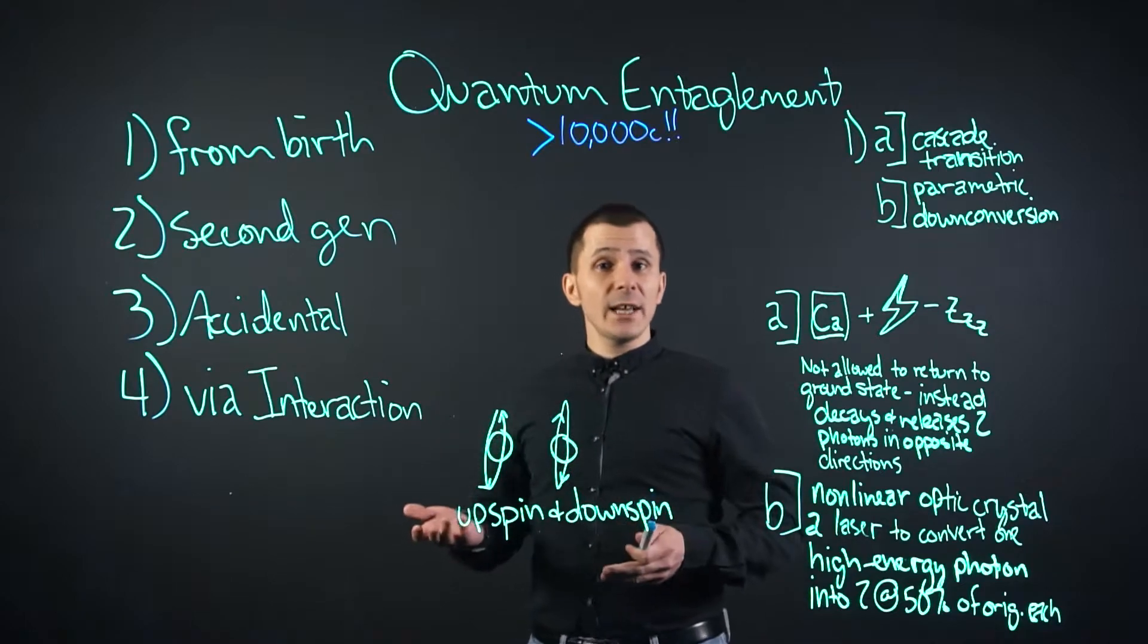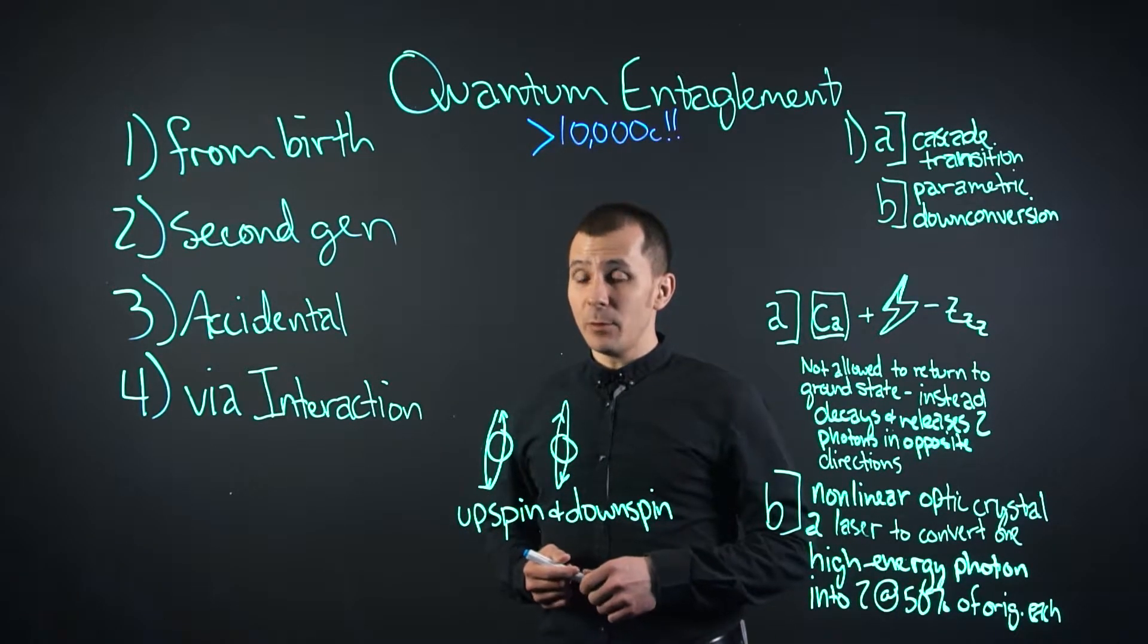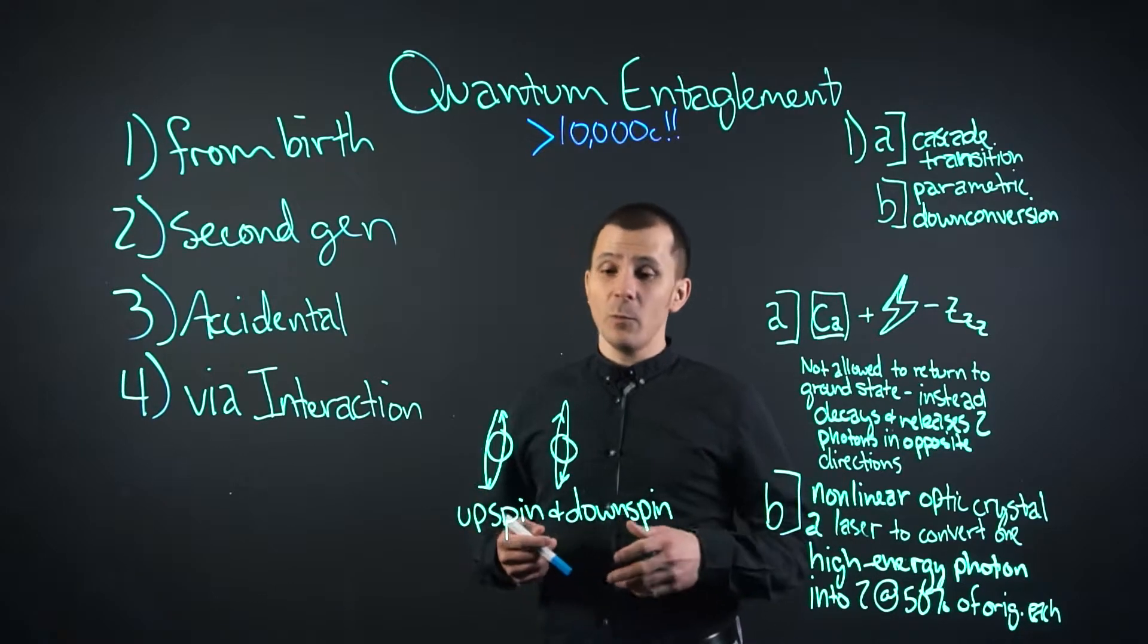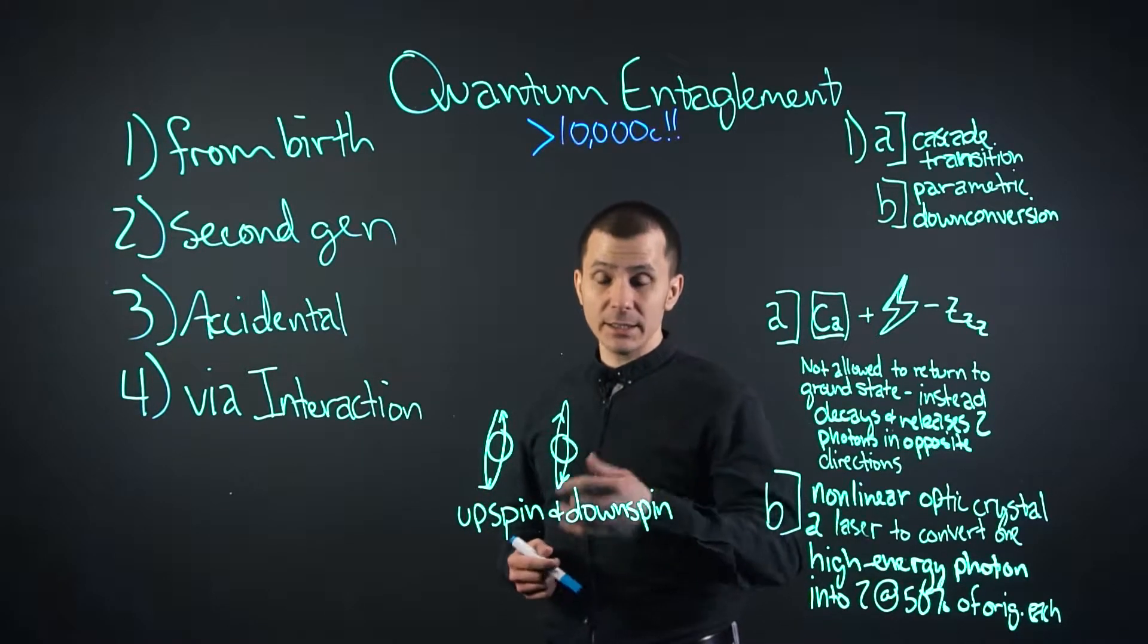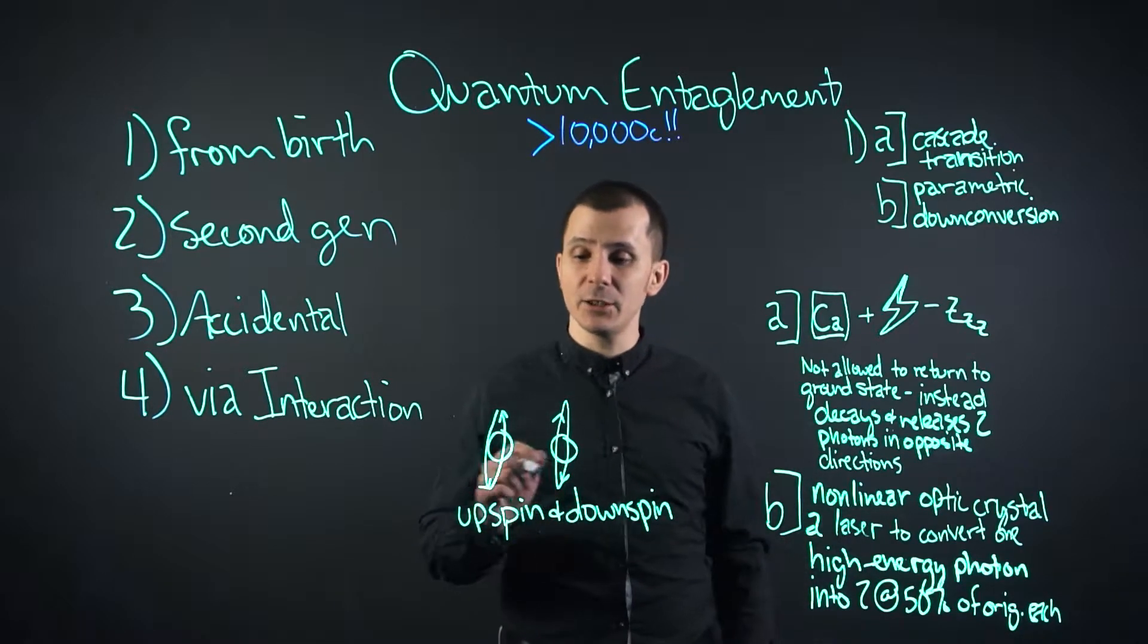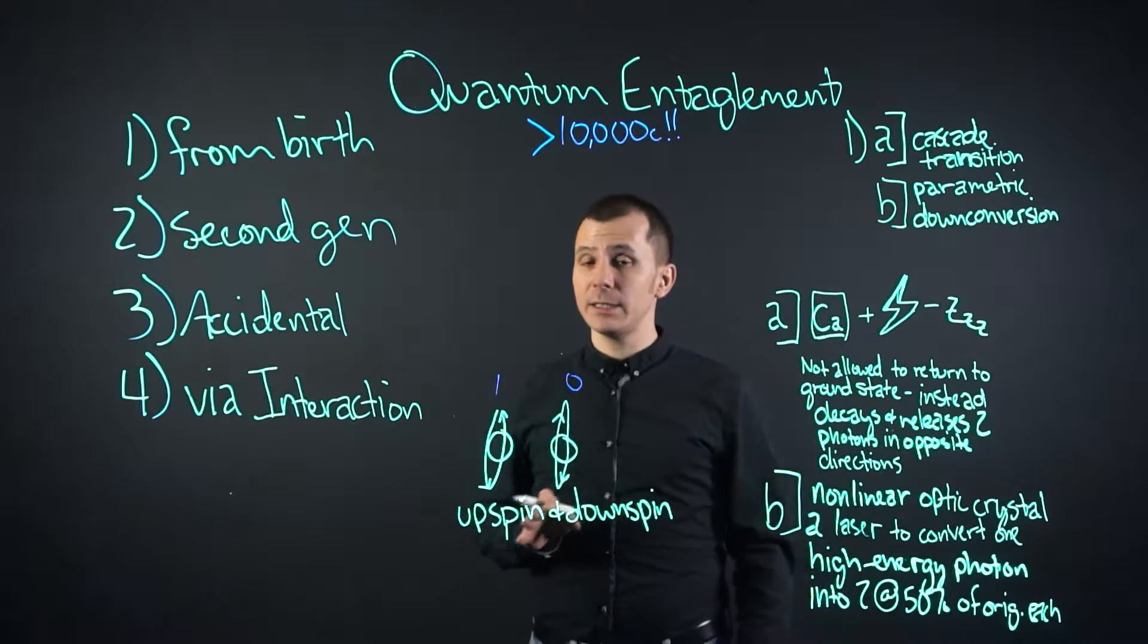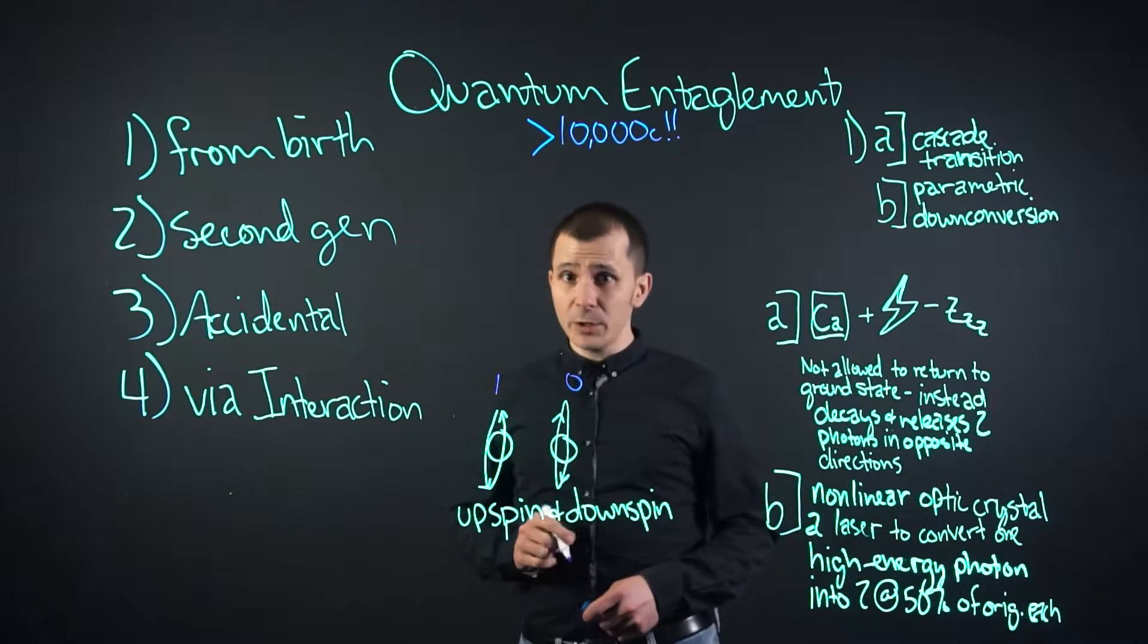Quantum entanglement has a variety of uses. For example, the quantum Zeno effect, where when you cause something to happen to one particle, the other reacts. Essentially, you end up with the transmission of a one or a zero when you do this.